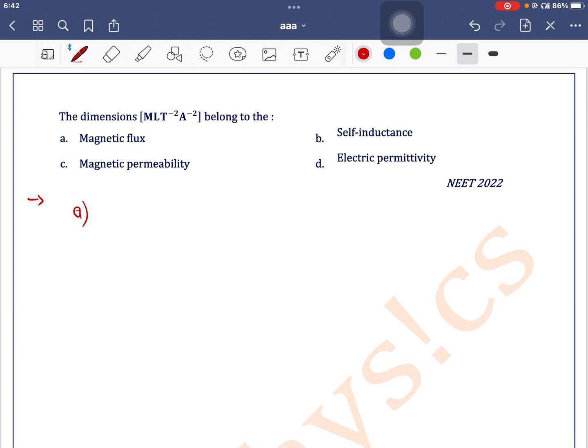First one is the magnetic flux. Magnetic flux is written as B into A, and the formula for B can be written as F divided by IL into A.